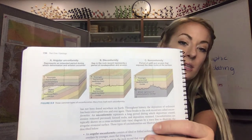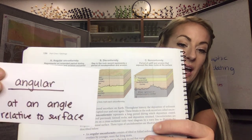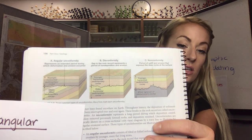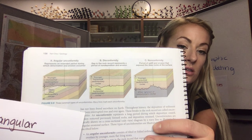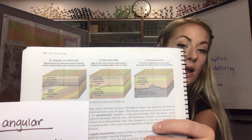Angular is going to be the easiest to spot. An angular unconformity is just going to be at an angle relative to the surface. So we see those surficial layers are still horizontal, whilst the layers below them are at an angle.